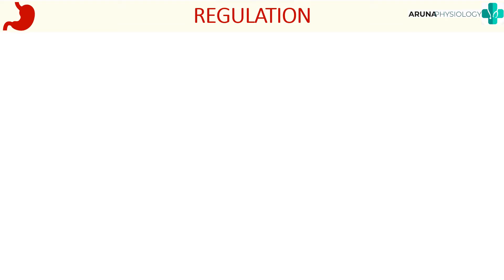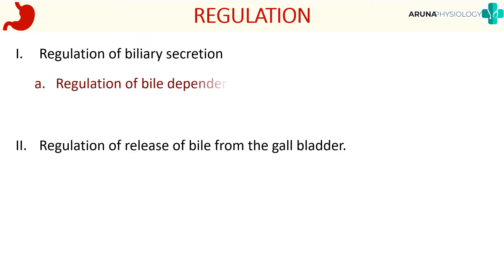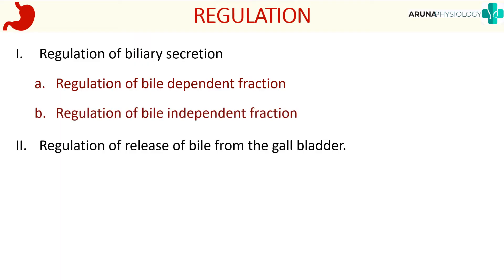Regulation of biliary secretion can be divided into two parts: regulation of biliary secretion — meaning the amount of bile produced by the parenchymal cells of the liver — and regulation of release of bile from the gallbladder. The first concerns production of bile, the second concerns release of bile. Regulation of biliary secretion can further be divided into regulation of the bile dependent fraction and regulation of the bile independent fraction.